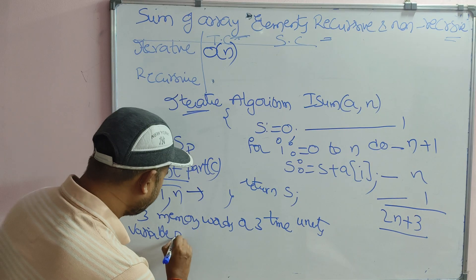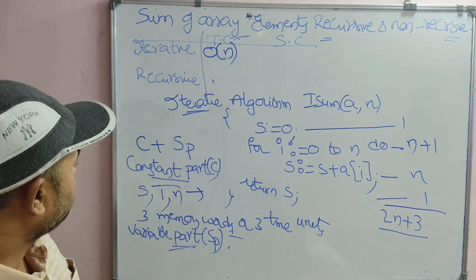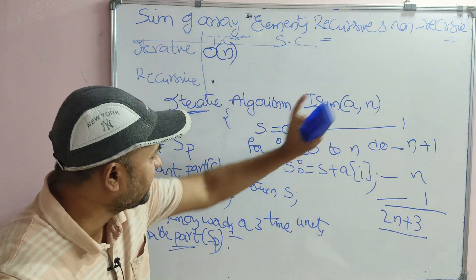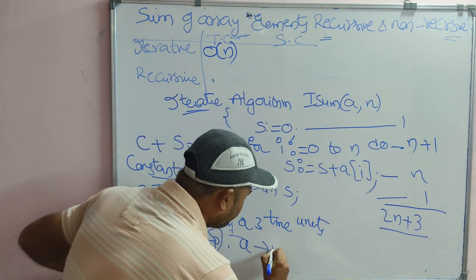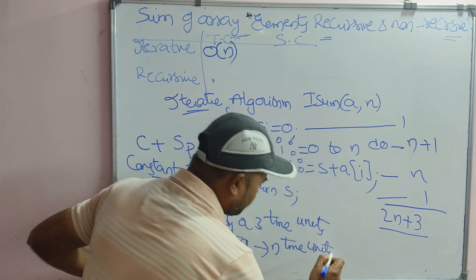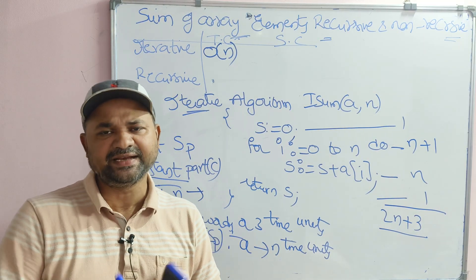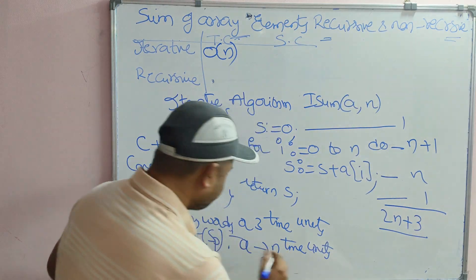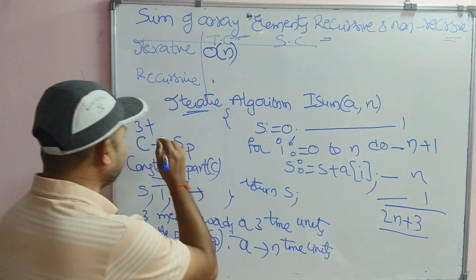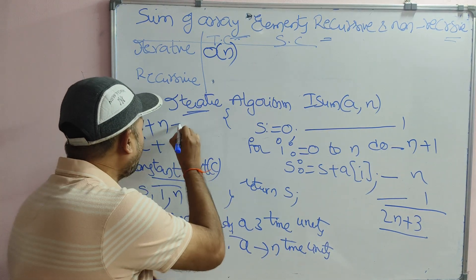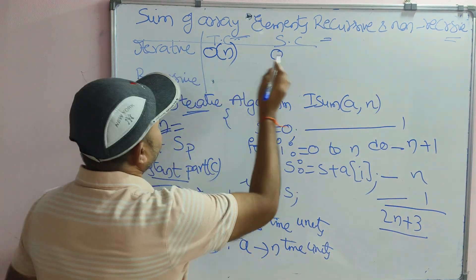Let us focus on the variable part. The variable part depends upon some other variable. Here, A is depending on some other variable — A has size N. In order to store A, N memory units are required. For example, if N is 5, then 5 units are required; if N is 3, then 3 units are required. So the space complexity is C plus SP, which is 3 plus N, giving us order of N.